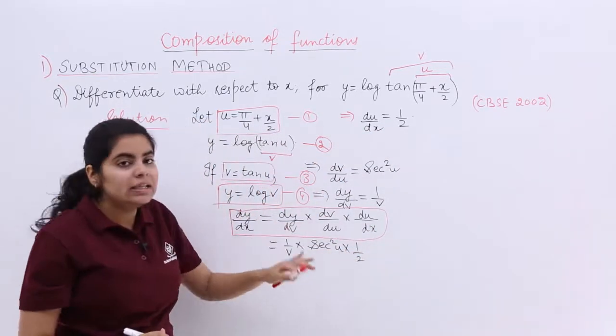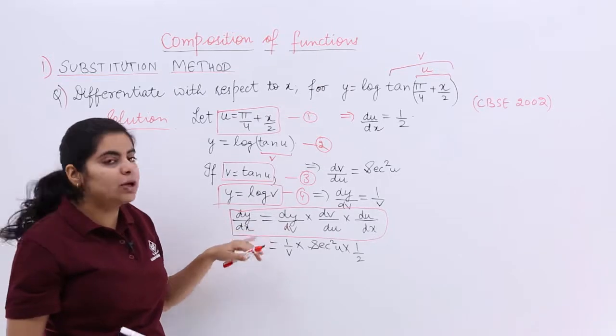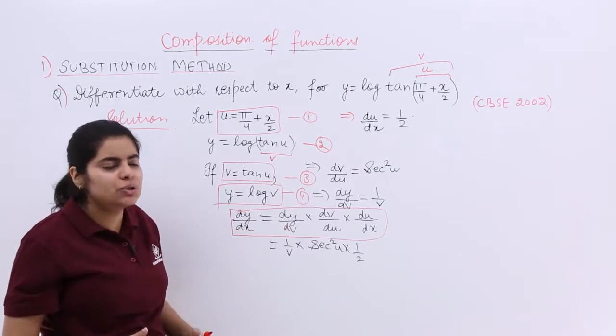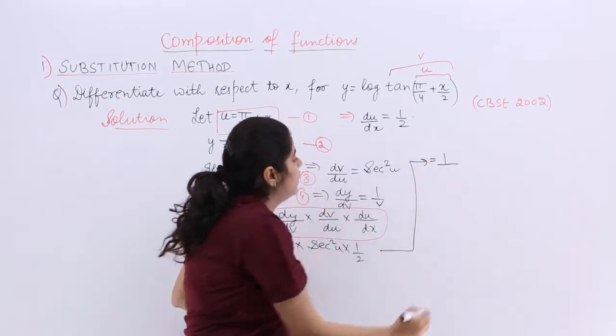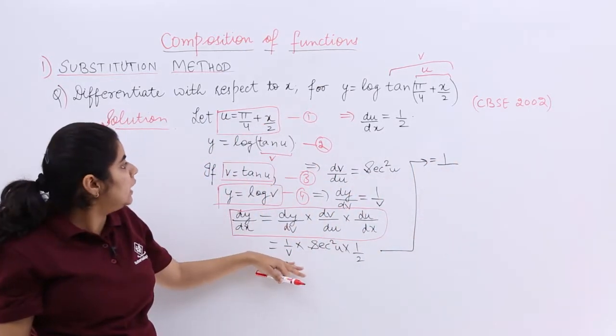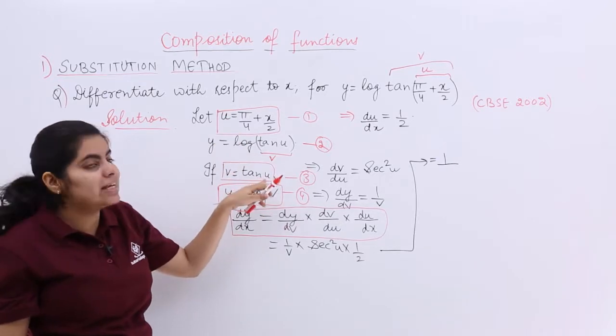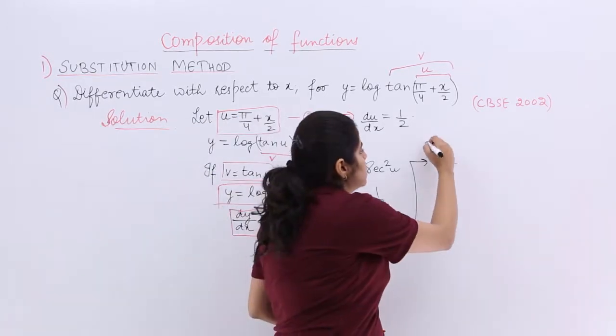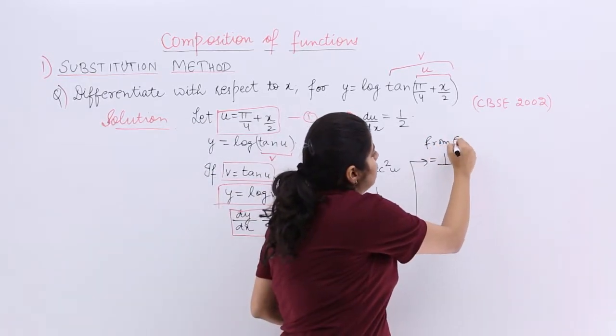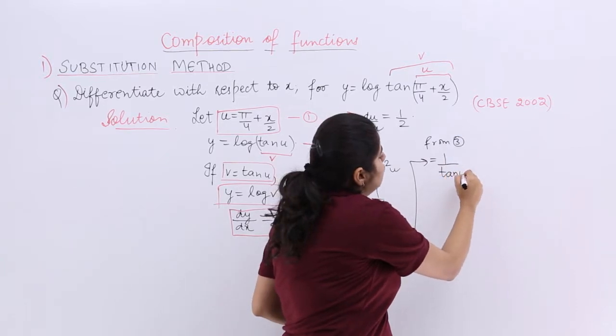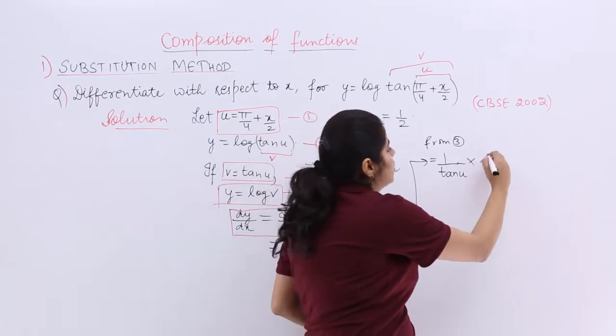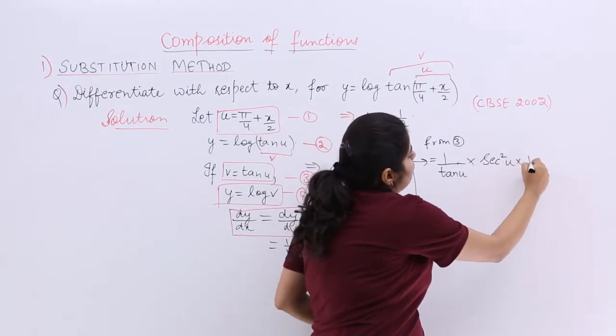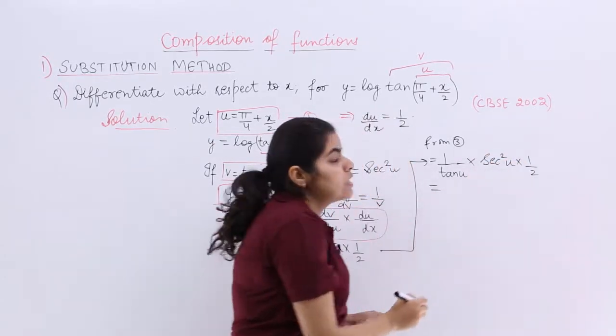Now, the answer should be in x because it is dy by dx. Let's substitute the things 1 by v moving from here to here. 1 by v. What is v? v is what? Let's find it. It is tan u from 3. So from 3, v is tan u. Rest remains the same. Secant square u, 1 by 2. Secant square u, 1 by 2. Now, what is u?